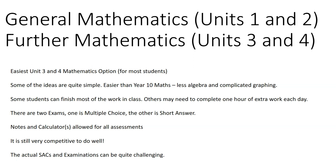General Mathematics Units 1 and 2 leads to Further Mathematics Units 3 and 4. It's the easiest Unit 3 and 4 maths option, so it's the one for most students. Some of the ideas are quite simple, in fact easier than Year 10 maths, because there's less algebra and complicated graphing. Some students can finish most of the work in class. Others may need to complete one hour of extra work each day.